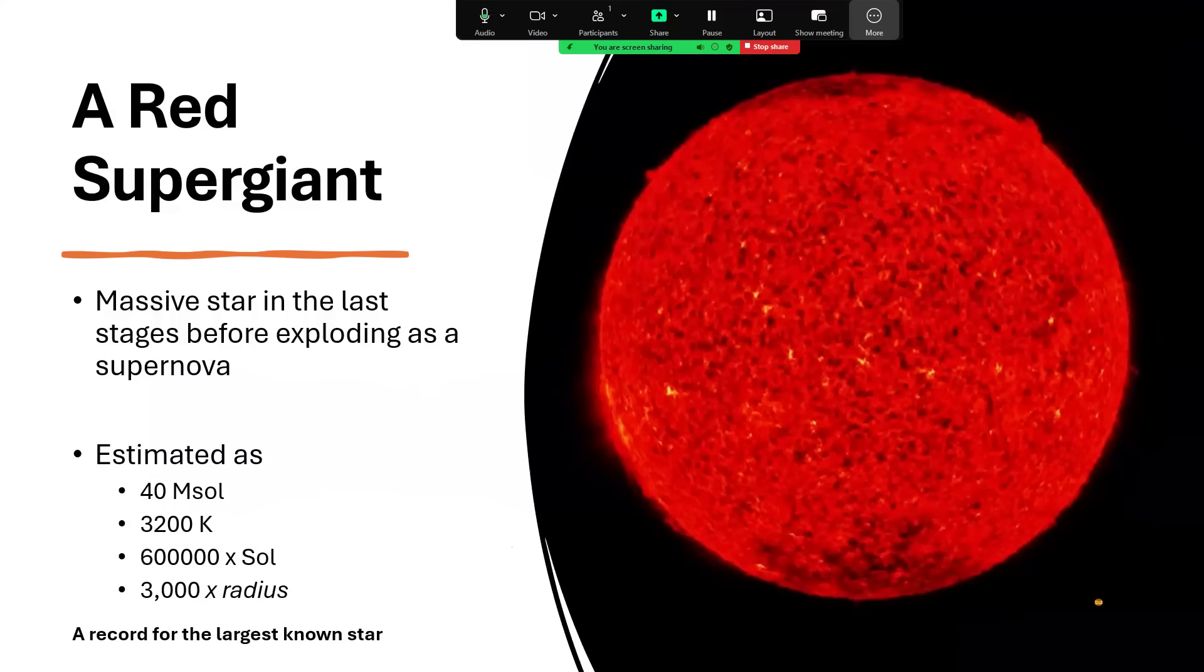So what is the nature of the star? Well, it's a red supergiant, a massive star in the very last stages before it will explode as a supernova. 40 times the mass of the sun, surface temperature 3200 Kelvin, so red hot, and putting out 600,000 times the power that our sun does over an area of 3000 times the radius. So the area would be pi r squared, of course, hence the numbers work out.